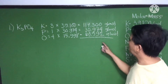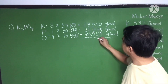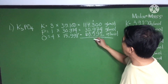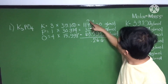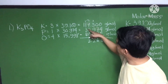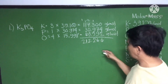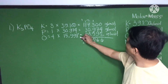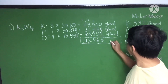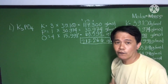Now you're going to add them all up: 117.300 plus 30.974 plus 63.992. The result is 212.266 grams per mole. That would be the molar mass of K₃PO₄.